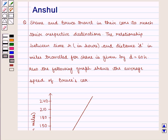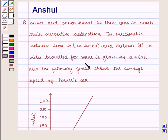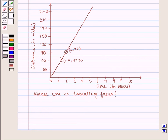Hello and welcome to the session. In this session we are going to discuss the following question: Shane and Bruce travel in their cars to reach their respective destinations. The relationship between time h in hours and distance d in miles traveled for Shane is given by d is equal to 60 into h. Also the following graph shows the average speed of Bruce's car. Whose car is traveling faster?